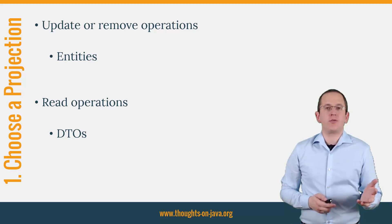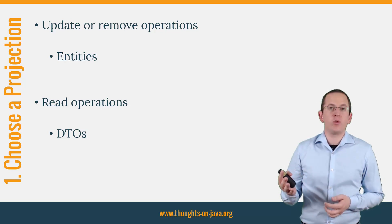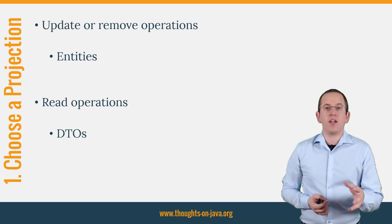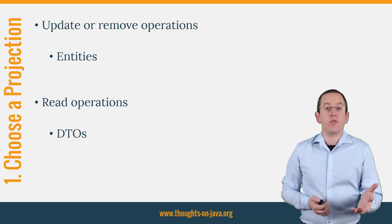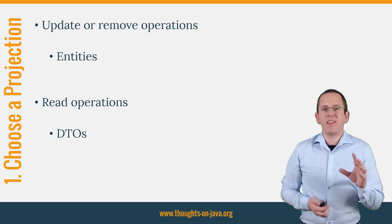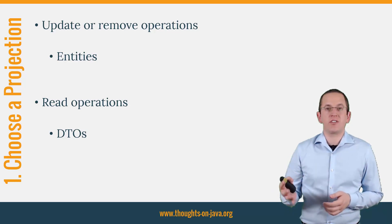Entities are a good fit if you have to update or remove a record. They might also be ok for use cases which need to read almost all entity attributes. But keep in mind that the persistence context has to manage the entities, which creates an overhead compared to a DTO projection. DTOs are a good fit for use cases that only need to read a record if they provide all required and no additional properties. That often requires you to create a new DTO when you implement a new use case. You can't reuse the same DTO and data access services for all use cases if you want to optimize for efficiency.